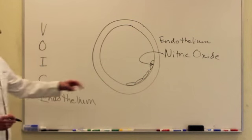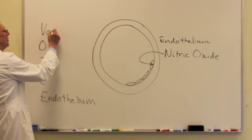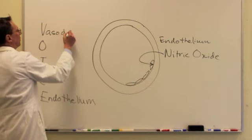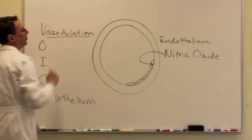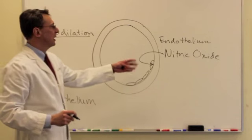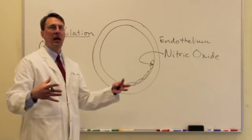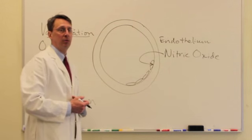The first thing that nitric oxide will do for us is function as a vasodilator. So vasodilation is the term that describes the ability of the nitric oxide to relax the blood vessel and allow it to get bigger in response to greater volumes of blood moving through it.